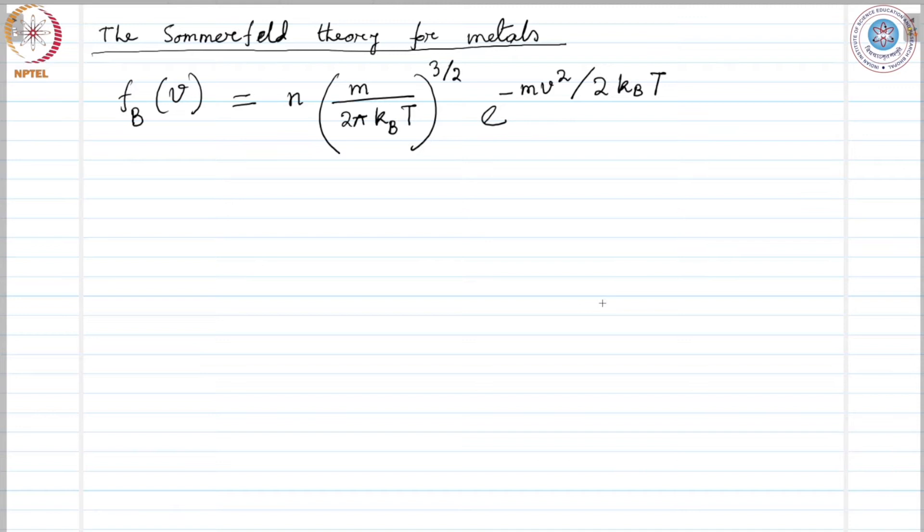Sommerfeld also applied Pauli exclusion principle. And if now we consider these two things, we can find the ground state properties of the electronic gas. After considering the Fermi-Dirac statistics and Pauli exclusion principle, we assume that the electrons do not interact with one another.